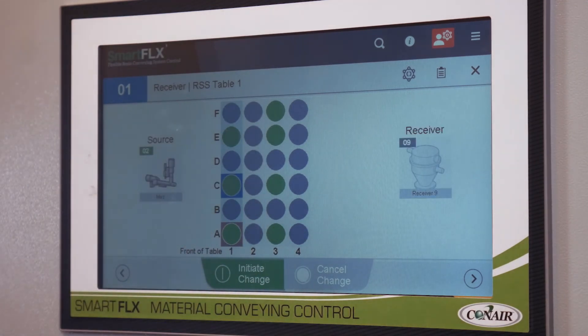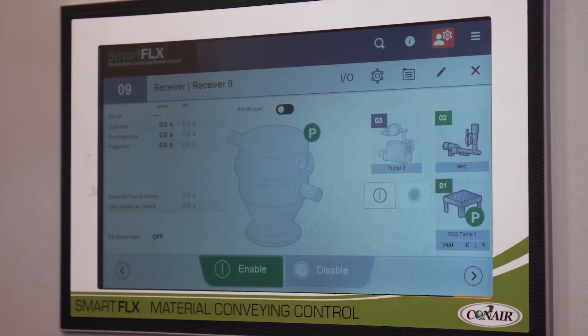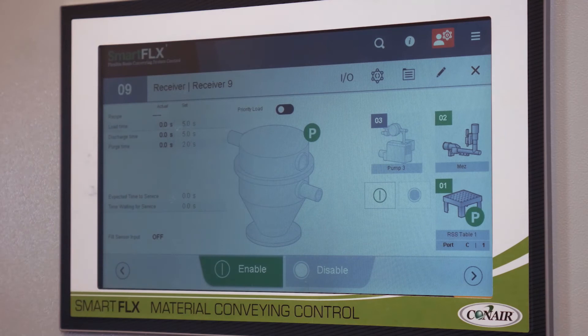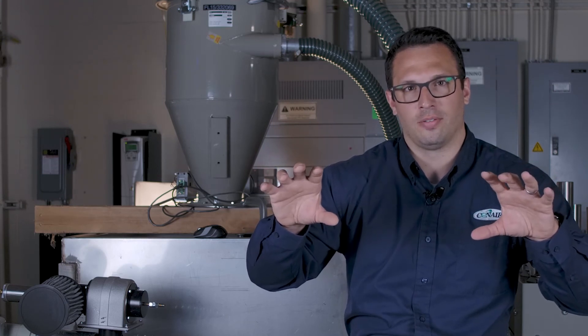Now, if you assign multiple receivers to the same source, either through a resin selection station or on a common line, we have to manage that software to make sure that each of those first-in, first-out algorithms that we put together and each of those queues for the receivers, we now have to stack those on top of each other.